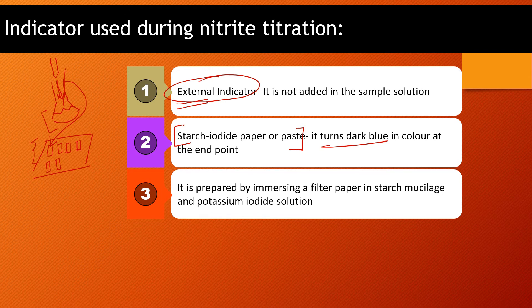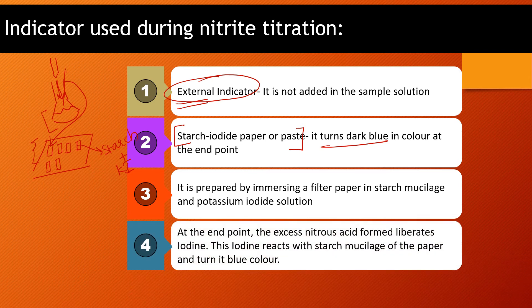The starch iodide paper or paste is prepared by immersing a filter paper in starch mucilage and potassium iodide solution, so the paper has starch and potassium iodide on it. At the end point, the excess nitrous acid formed liberates iodine. This iodine reacts with the starch mucilage of the paper and turns it blue in color.